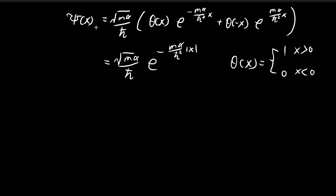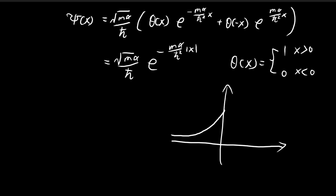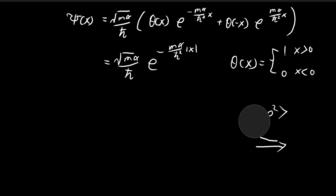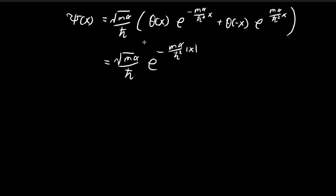The reason I've expressed ξ this way is because the graph of ξ is continuous, but not smooth — at x = 0, the derivative is not well defined. This affects what the second derivative should be. Since finding ⟨p²⟩ requires the second derivative of ξ, I need the step functions to capture what happens to the second derivative when x equals 0.